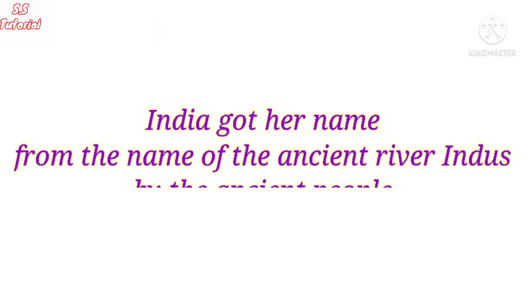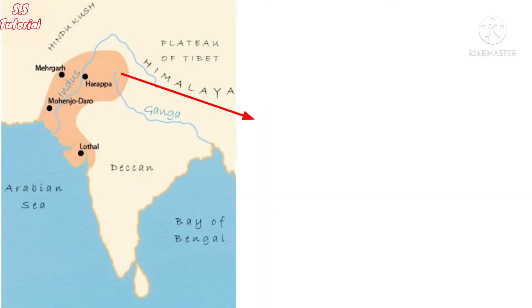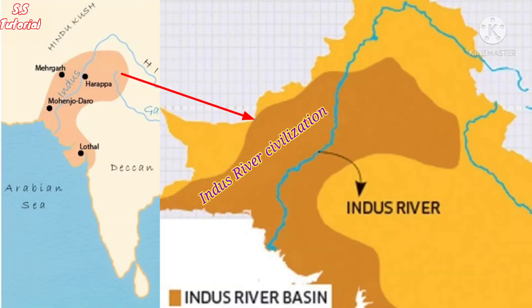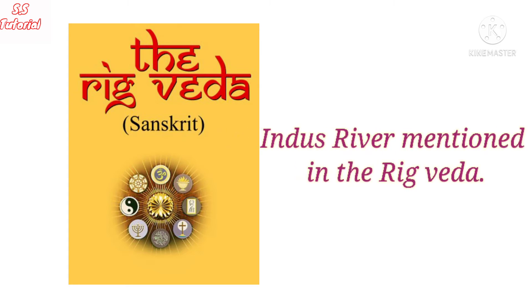The Indus river is one of the most ancient rivers of India. India got her name from the Indus river. The world's one of the most ancient civilizations, the Indus Valley Civilization, flourished around the Indus river basin. The Indus river is also mentioned in the Rig Veda and was the most holy river of that time.